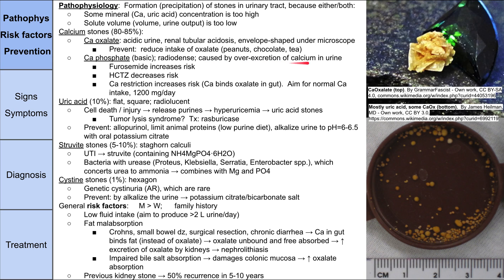Calcium phosphate is caused by over-excretion of calcium in the urine. Some diuretics increase the risk — furosemide increases the risk of calcium phosphate stones, whereas thiazide diuretics like HCTZ decrease the risk. Calcium restriction actually increases the risk, which is counterintuitive. When you eat calcium, those ions bind oxalate in the gut, making oxalate less likely to be absorbed. So patients should aim for a normal calcium intake of about 1200 milligrams a day.